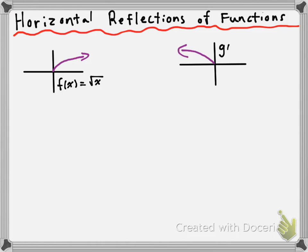Let's see what would happen when we horizontally reflect it. It's going to look like this — pointing to the left as opposed to the right. The function is going to be g of x is equal to the square root of negative x. In this case, what you're doing is taking the x that was in your parent function and replacing it with negative x. And that is going to reflect your function horizontally — so replacing x with negative x reflects the function horizontally.